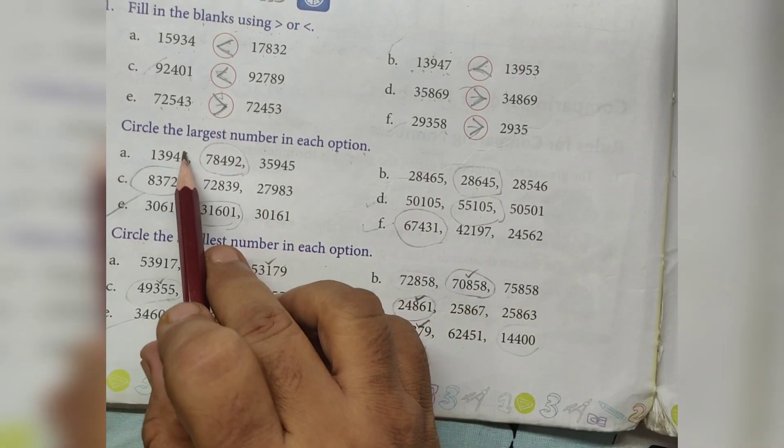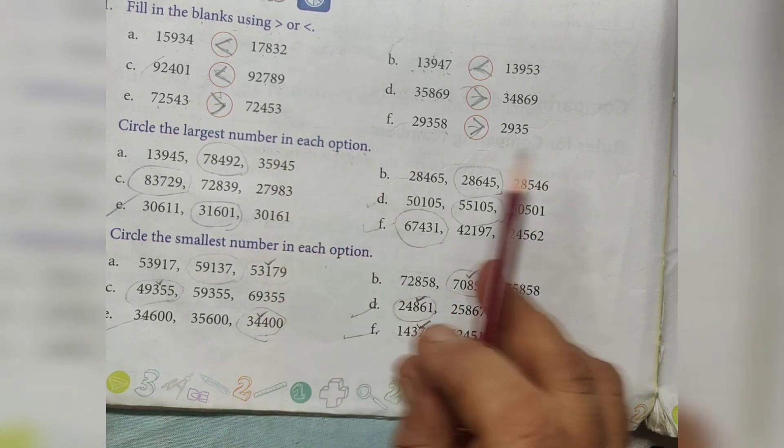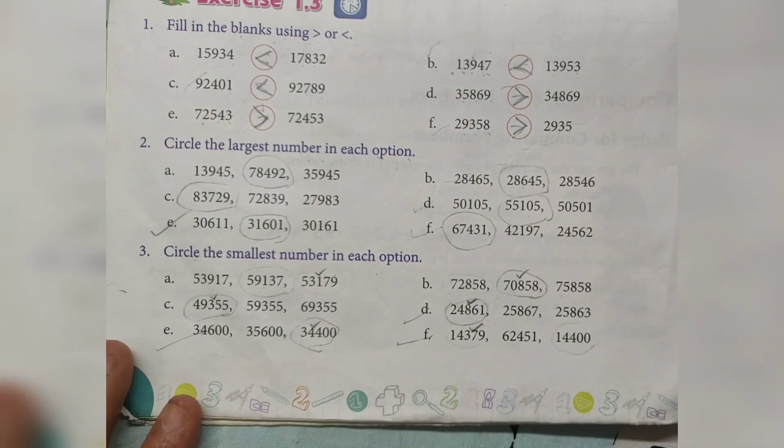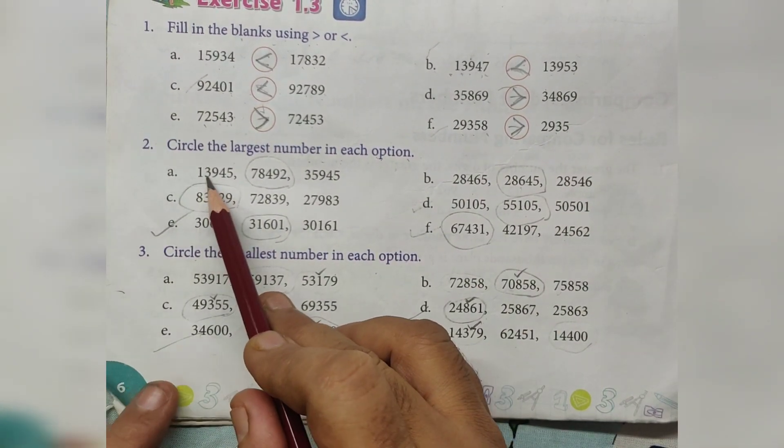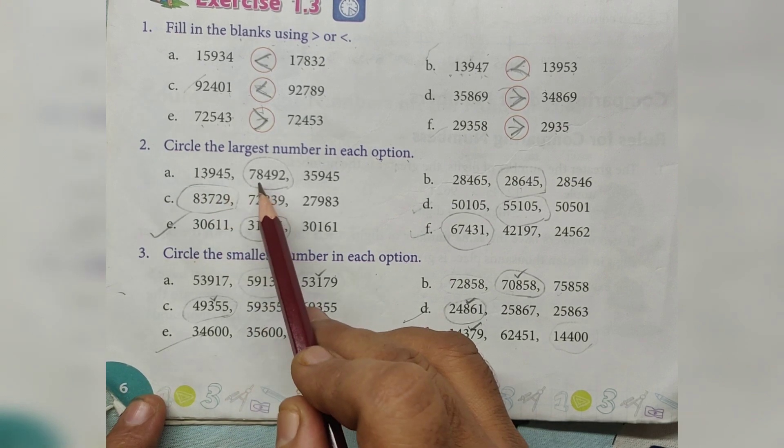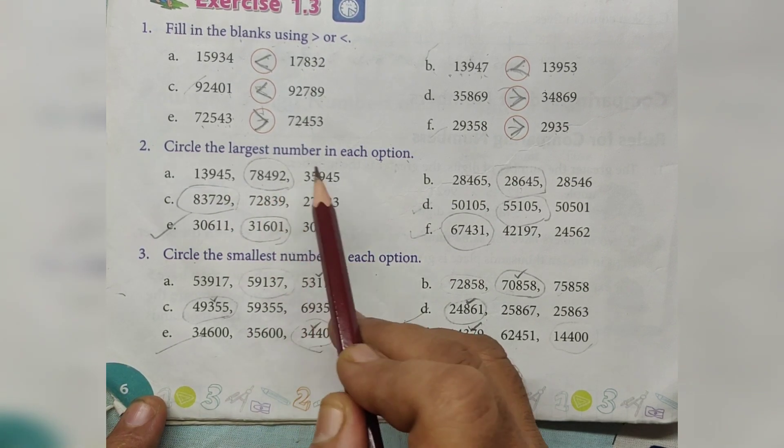Circle the largest number in each option. 13,945, 78,492.